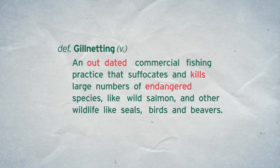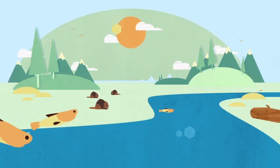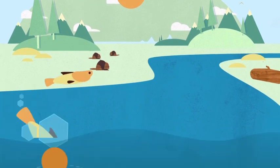Gill netting, an outdated commercial fishing practice that suffocates and kills large numbers of endangered species like wild salmon and other wildlife like seals, birds and beavers.